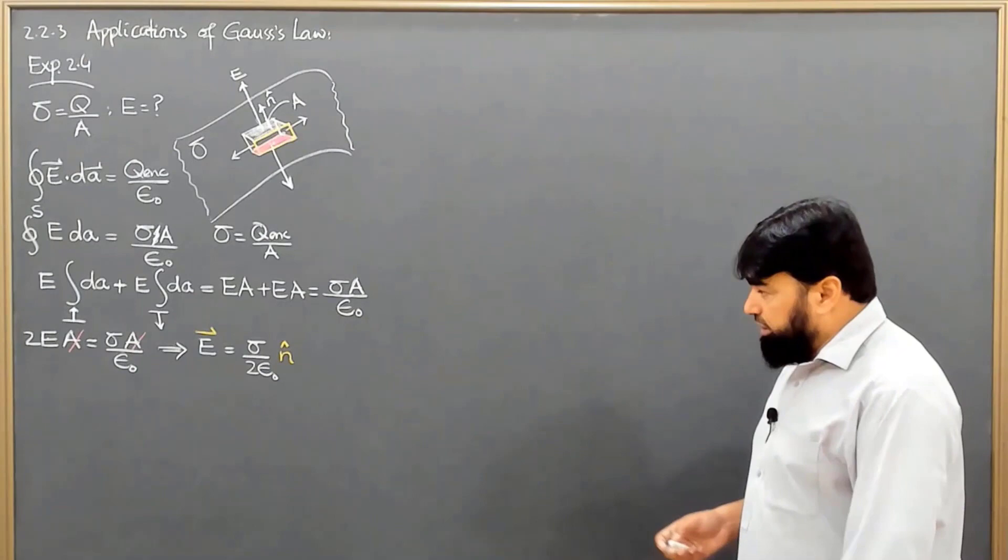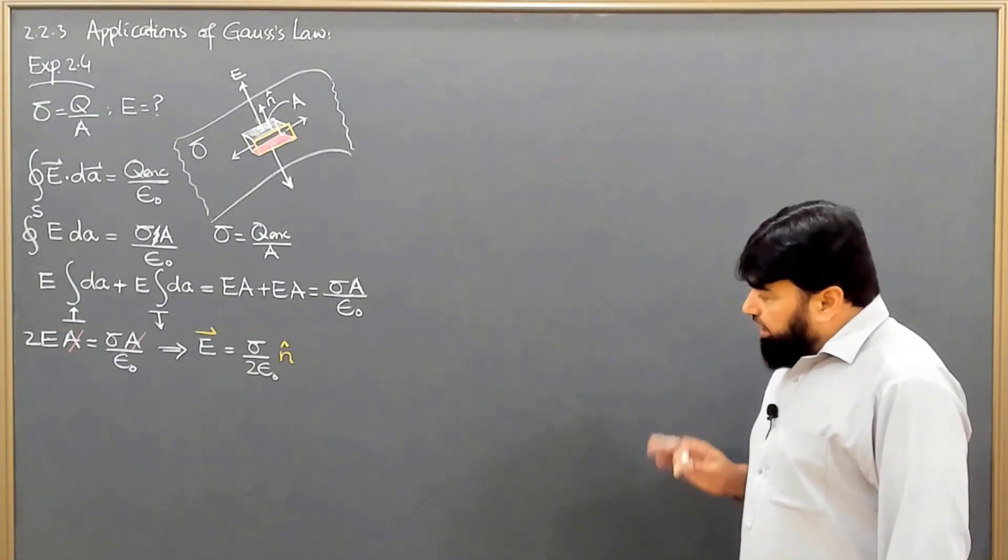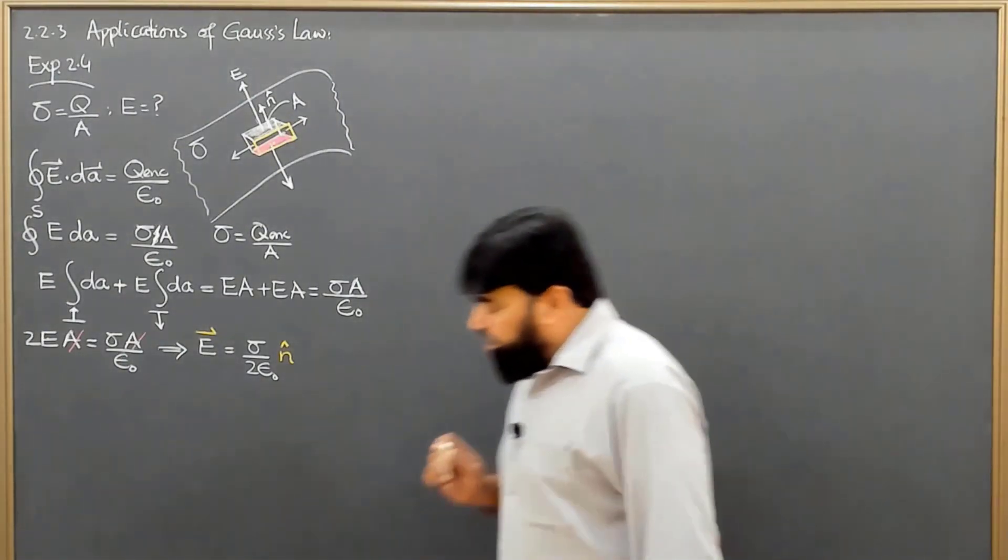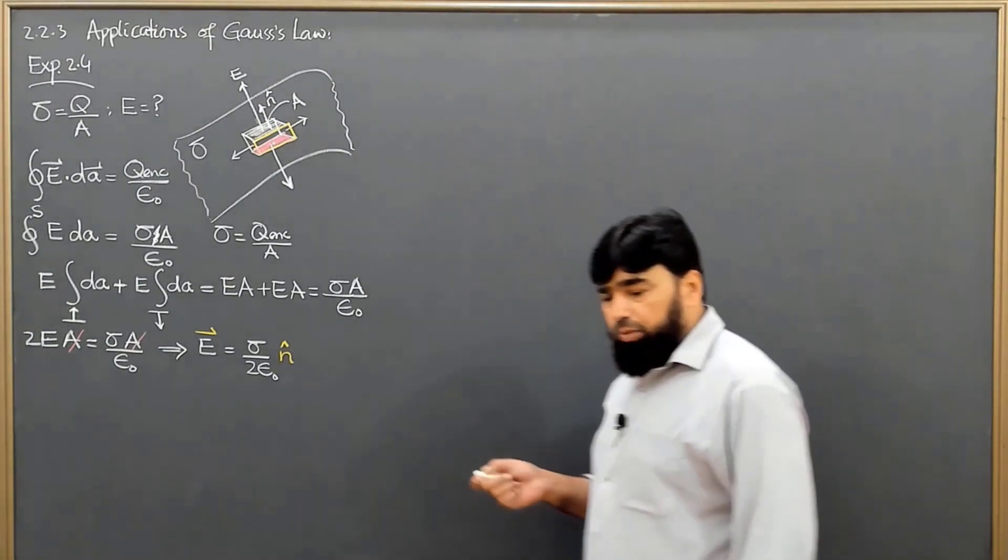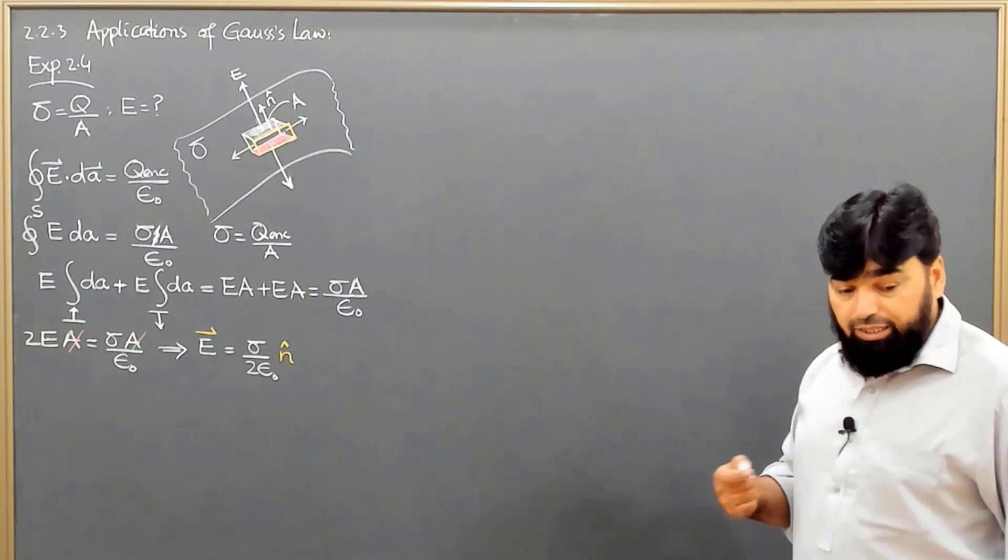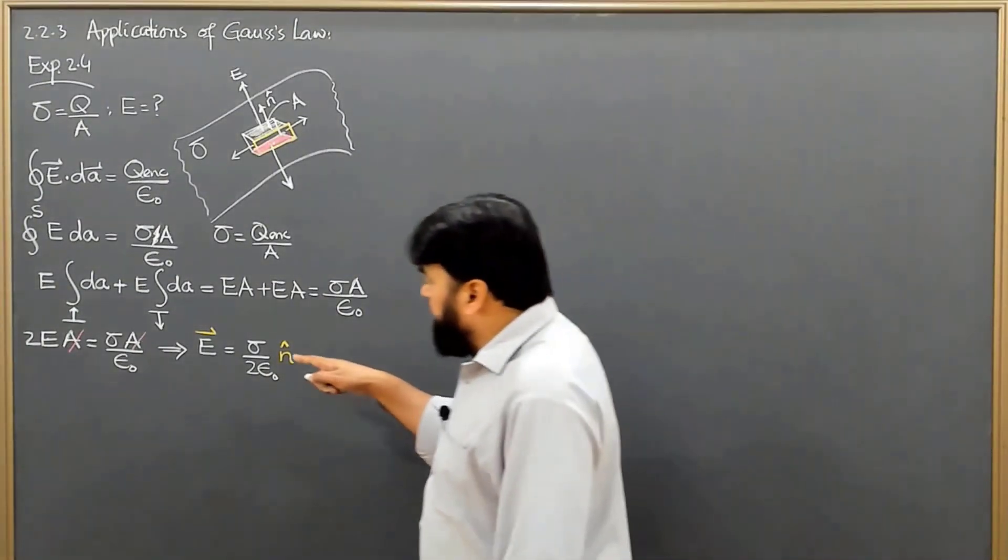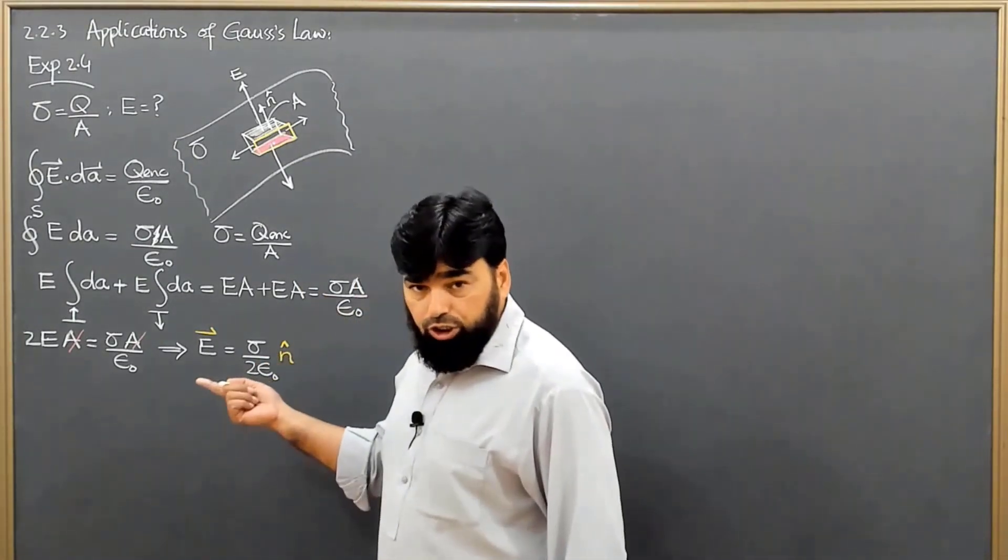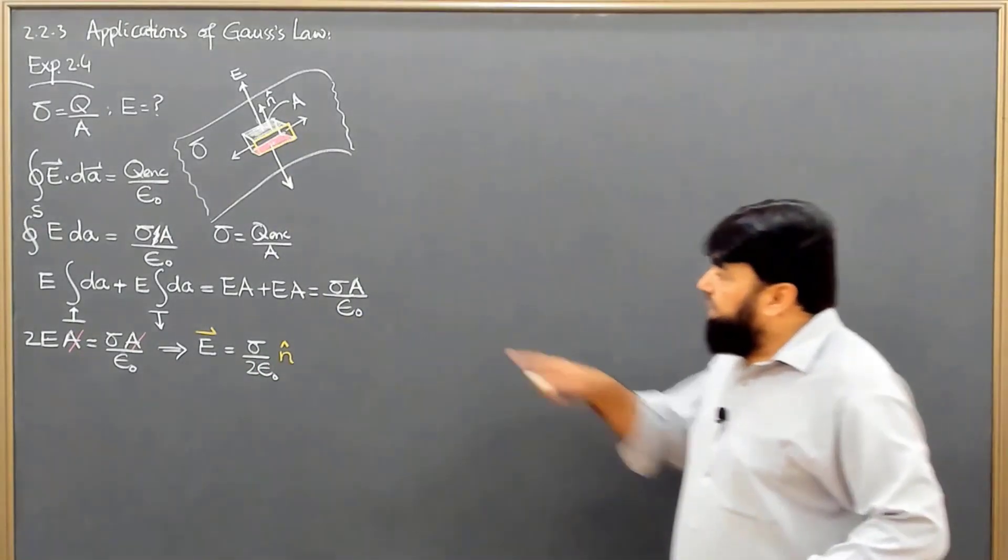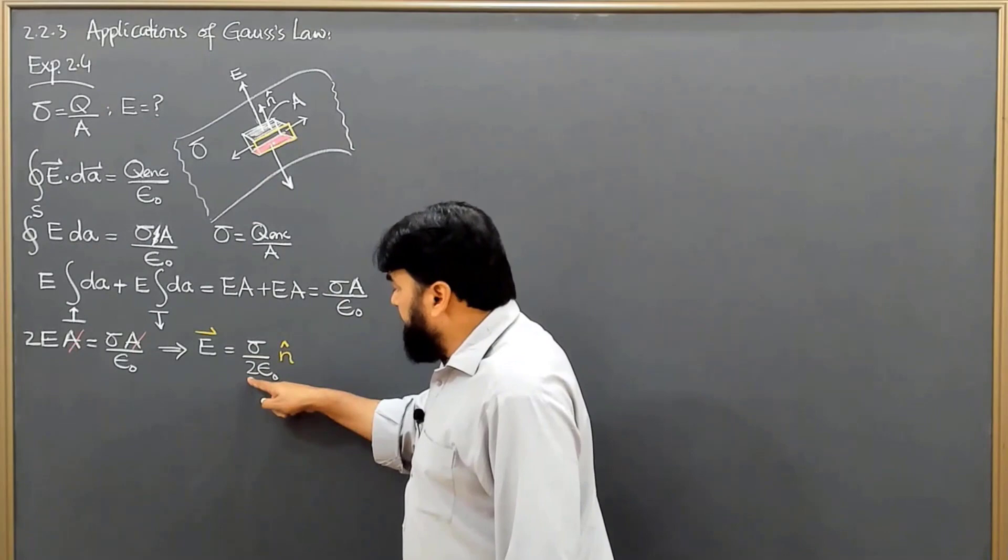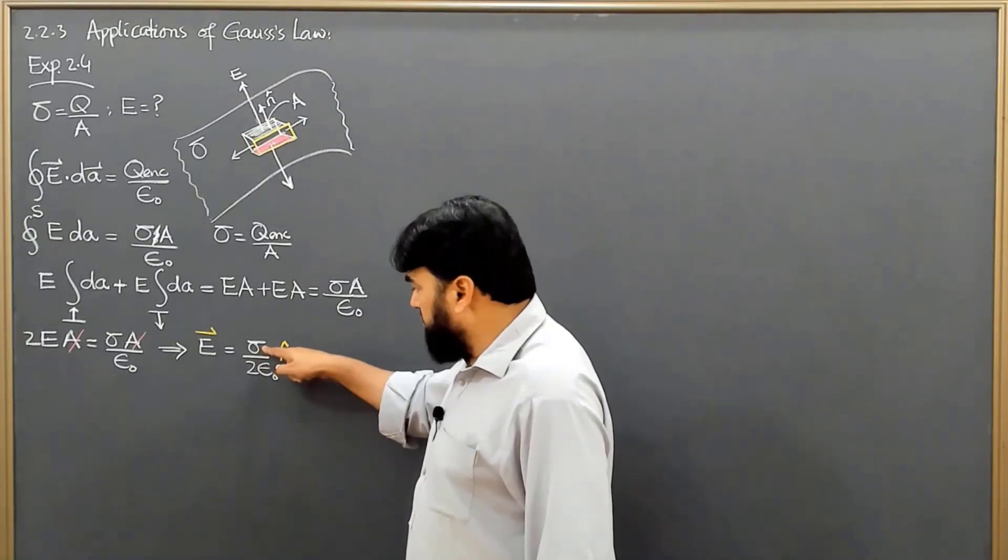We can discuss the solution here. We know that electric field of a sphere, electric field of a line charge, electric field of a cylinder, they are all dependent on the distance from the source. But if I look here, the electric field is completely constant. This is sigma over 2 epsilon naught.